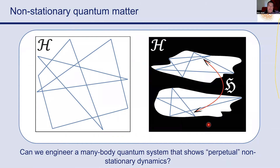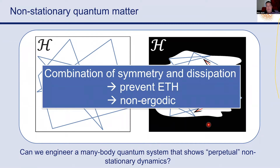The way we're trying to achieve this is through a combination of symmetry and dissipation. We want dissipation to prevent eigenstate thermalization — which makes quantum correlations deface because so many correlations contribute with different phases that any dynamics is lost very quickly. We're trying to engineer or find conditions that prevent eigenstate thermalization and make the system sufficiently non-ergodic to see oscillatory behavior at long times.